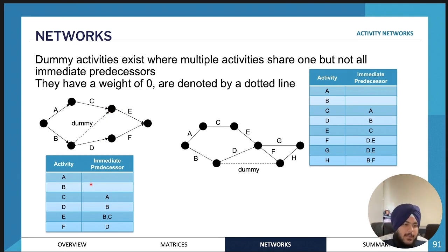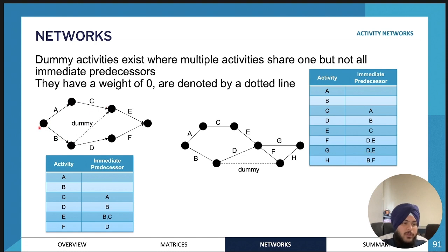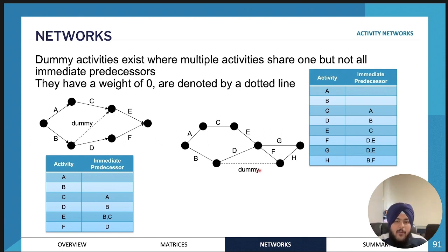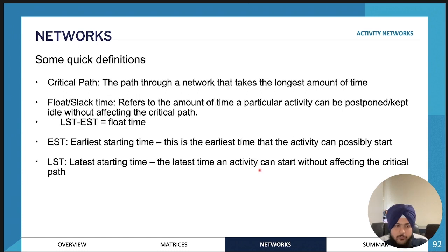We draw a dummy activity when multiple activities share one but not all immediate predecessors. By drawing a dummy activity, we show that activity D has an immediate predecessor of activity B, while activity E has immediate predecessors of activity C, activity B, and activity D. Dummy activities have a time of zero — they don't take any time; they're just there to make sure the activity network is correct.